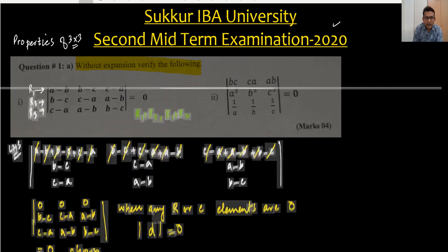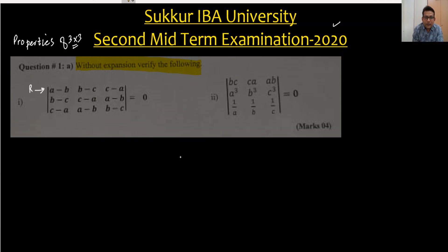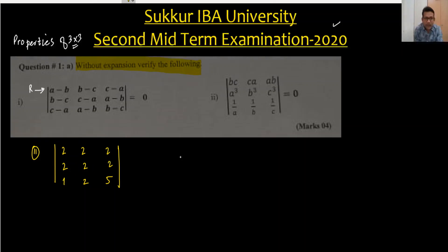Let's see what we can do for part two, question two of the first part. We have another property: in any three by three square matrix, if two rows are equal — for example, two two two and two two two — then the determinant is also equal to zero. This is the second property and I have to use it now.